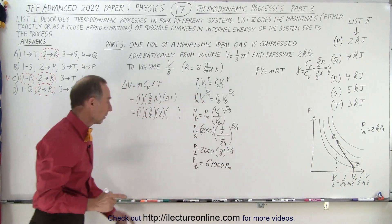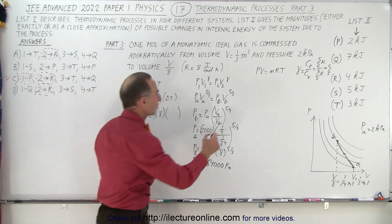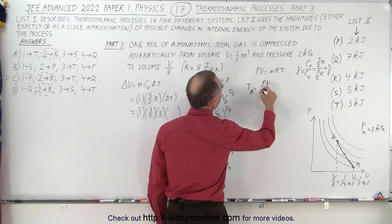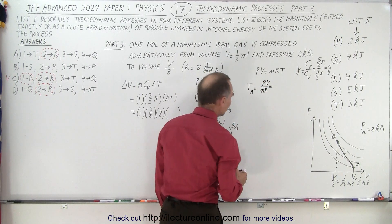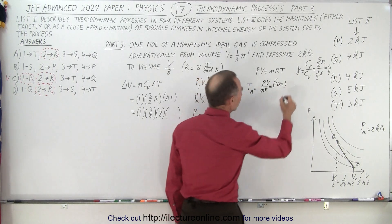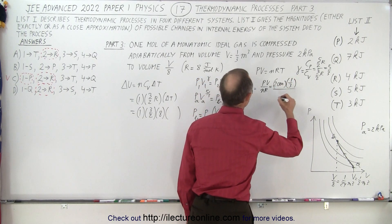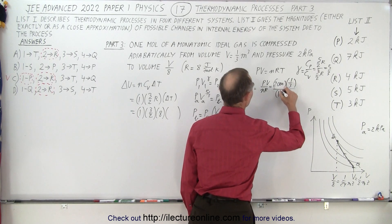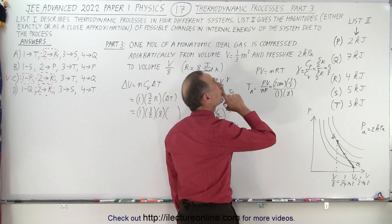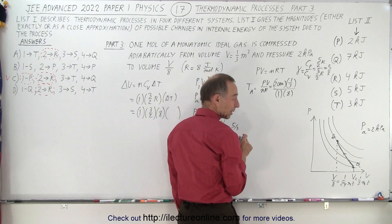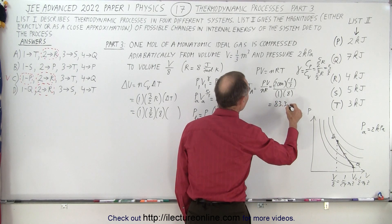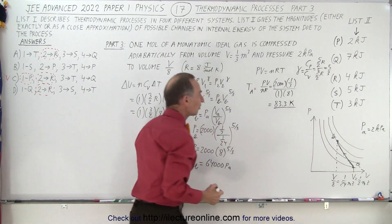That's how we find pressure at B. Now we need to find temperature at A. Temperature at A equals PV over NR. The pressure at A is 2,000, volume at A is 1/3, number of moles is 1, and R is 8. That's 250 divided by 3, which is 83.3 Kelvin. That is the temperature at A.